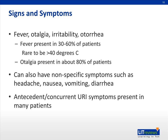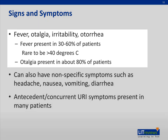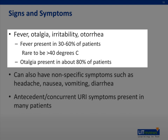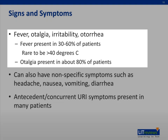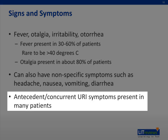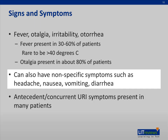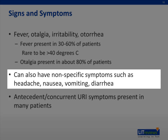The signs and symptoms of acute otitis media include fever, otalgia, otorrhea, and irritability. Fever is present in about half of patients but is rarely higher than 40 degrees Celsius, and otalgia is present in about three-quarters of patients. Many patients have concurrent or antecedent URI symptoms. Other nonspecific symptoms such as headache, nausea and vomiting, and diarrhea can be present as well.